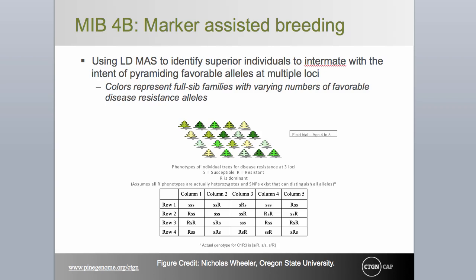Now imagine using markers at the same point in time and with the same population of trees, but with a complementary goal. Rather than simply selecting trees to move on to the next generation of breeding, we want to identify the best pairings of individuals to breed to ensure that progeny maximizes the number of loci in which they have alleles conferring resistance to a particular disease or insect. The table shows known phenotypes at three loci from which genotypes can be inferred, assuming that all resistance phenotypes represent a heterozygous condition with the large R allele dominant.